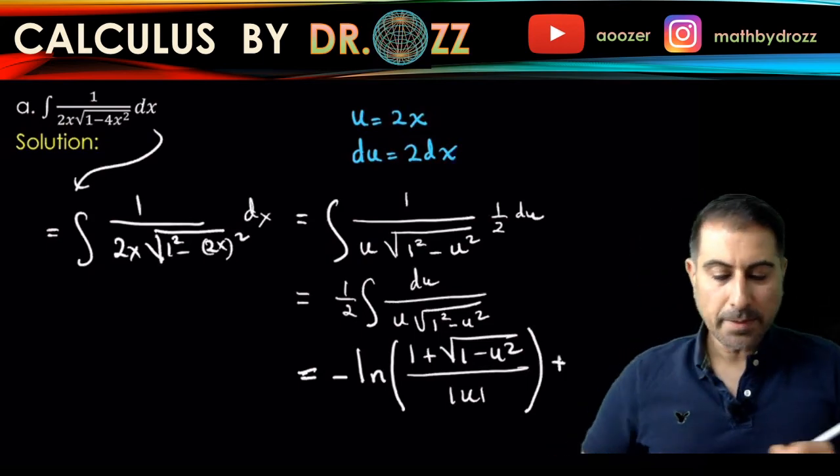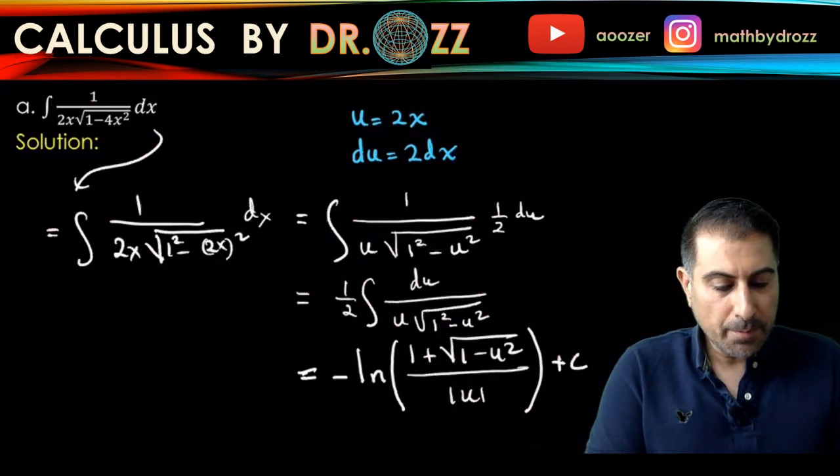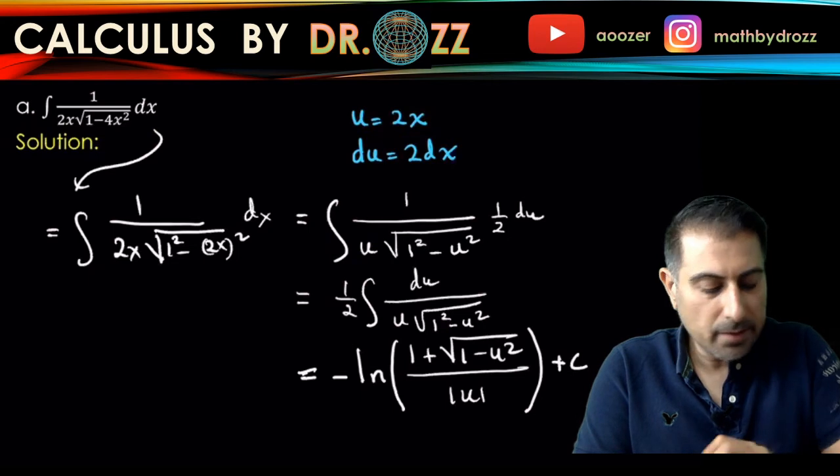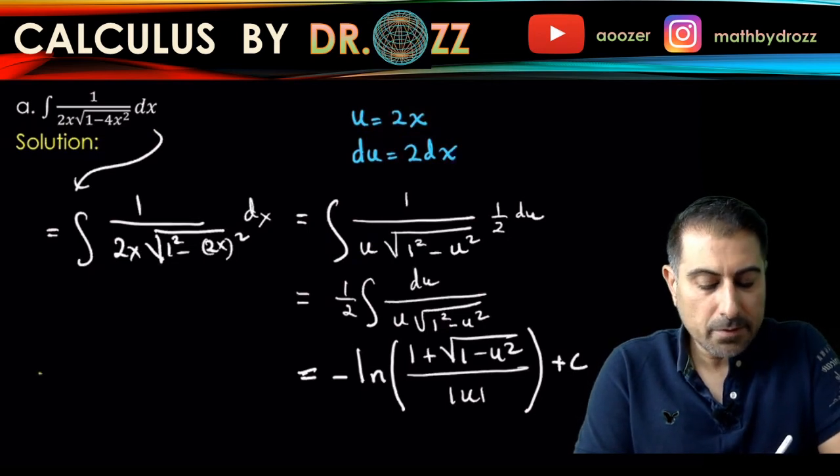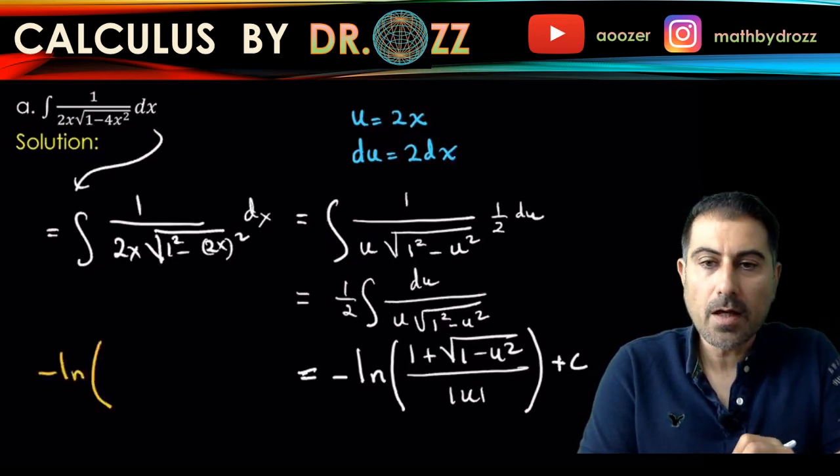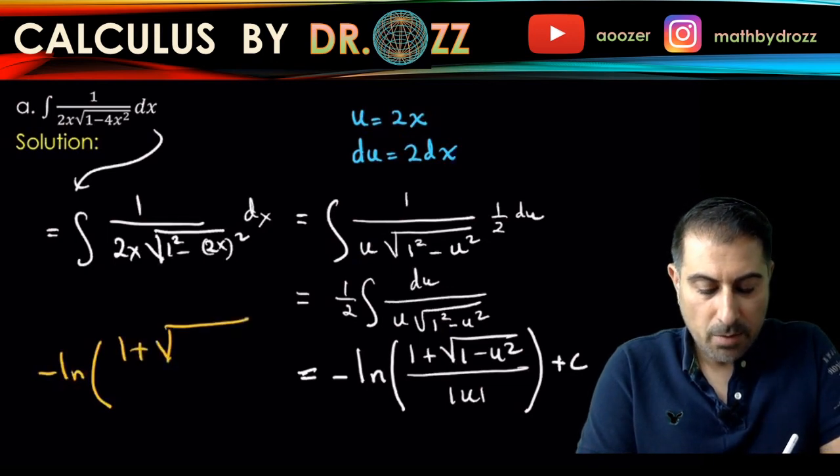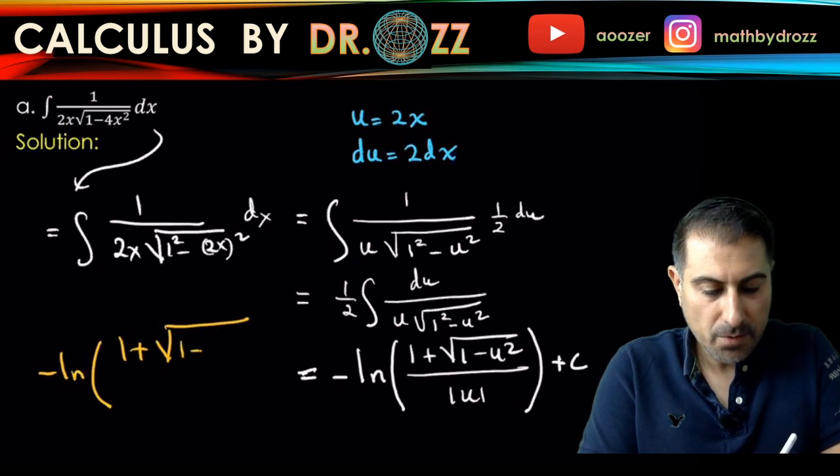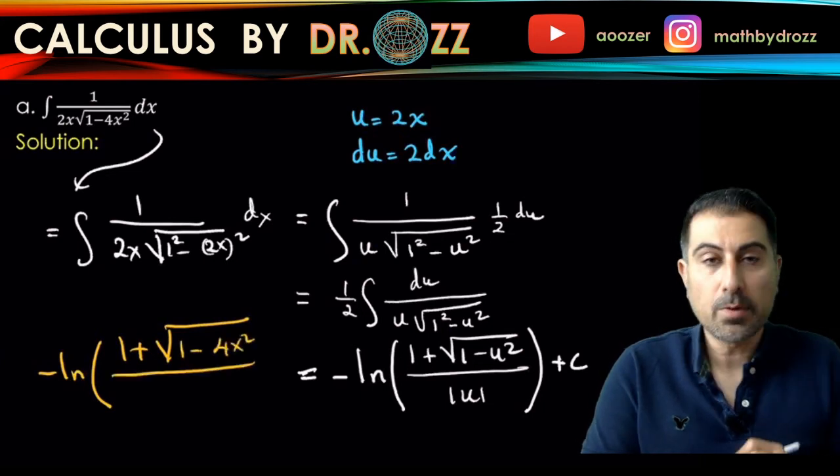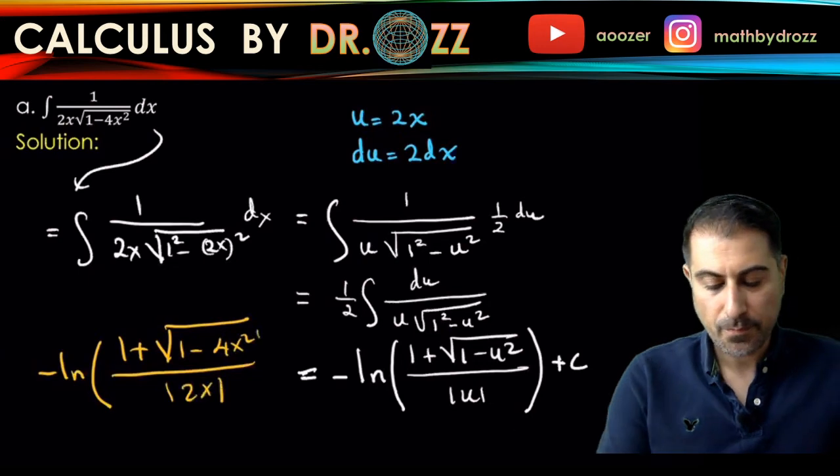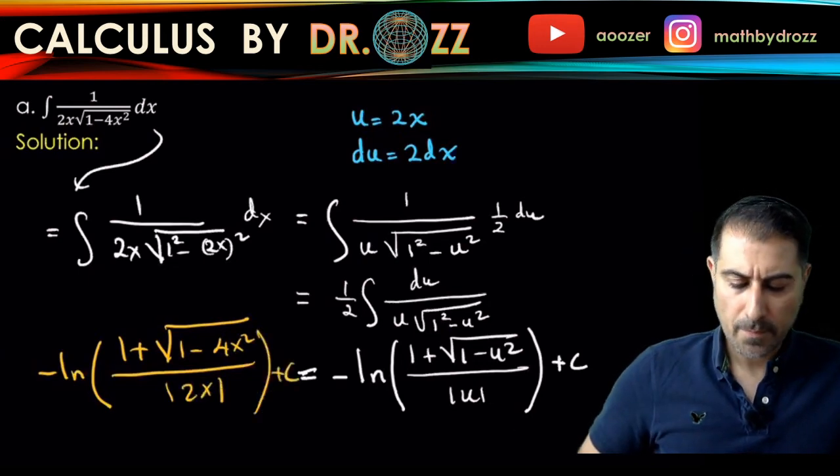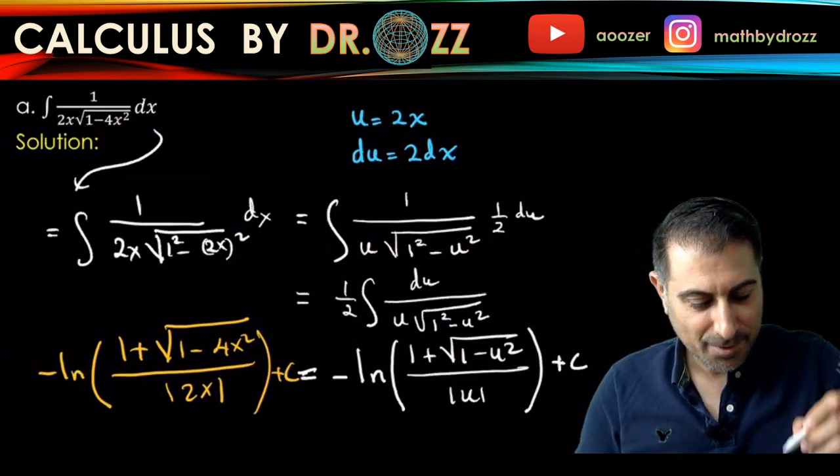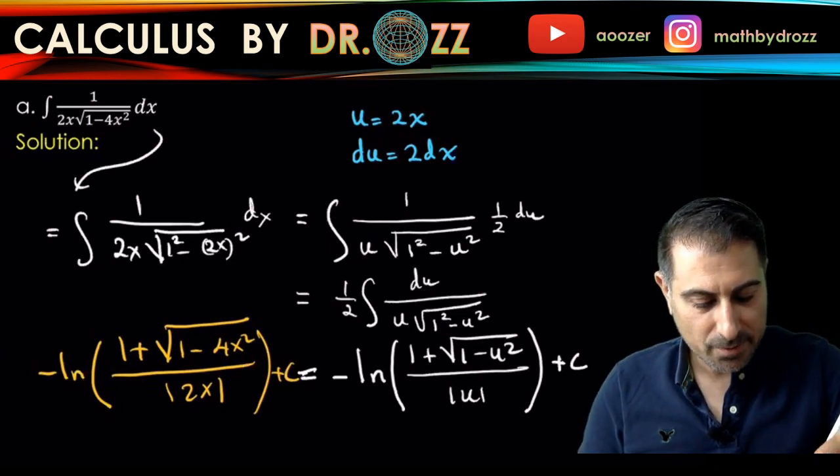I'm going to have the final shot here by back substituting u in the final form. So you have minus ln, one plus one minus 4x squared divided by the absolute value of 2x plus c. And do not forget the one half. So I forgot the one half. Please carry that one half forward. So you have the one half here.